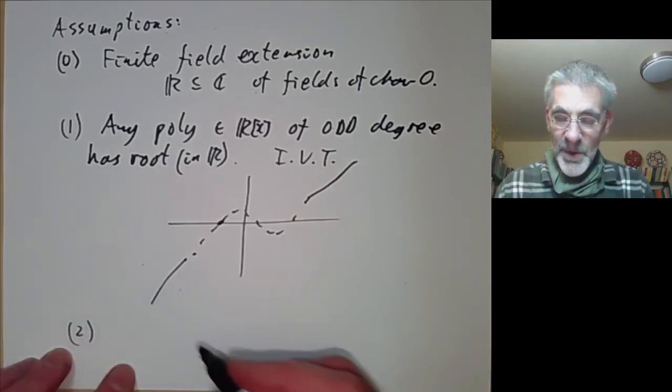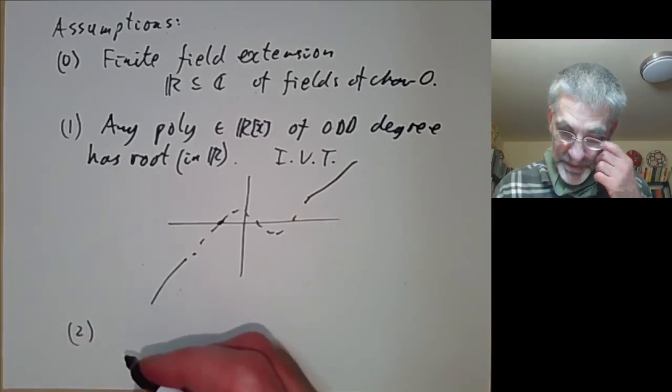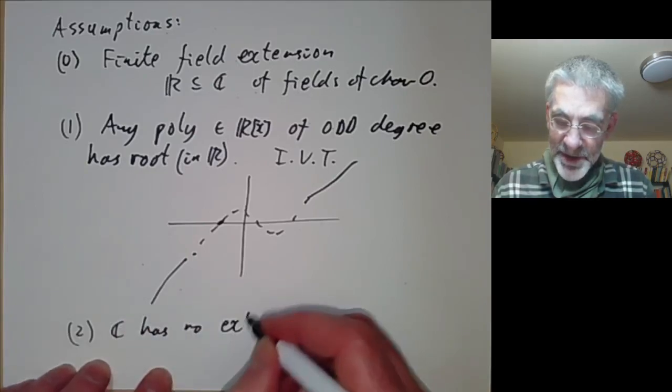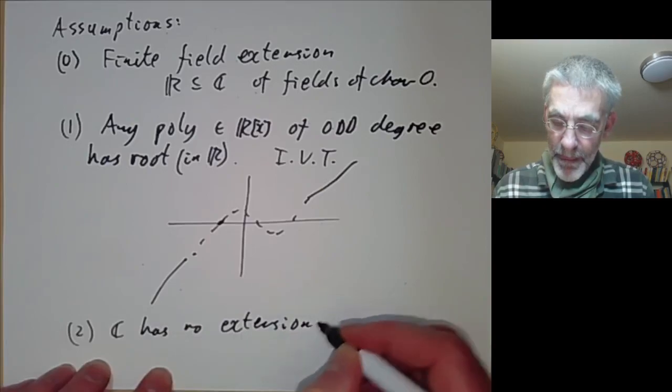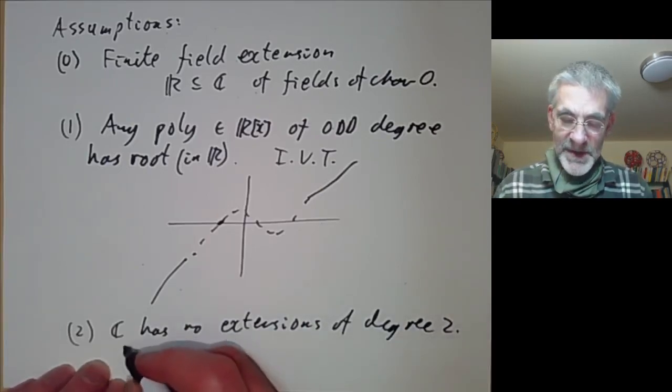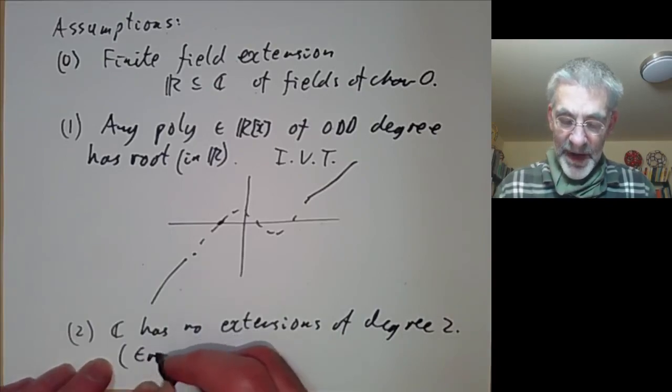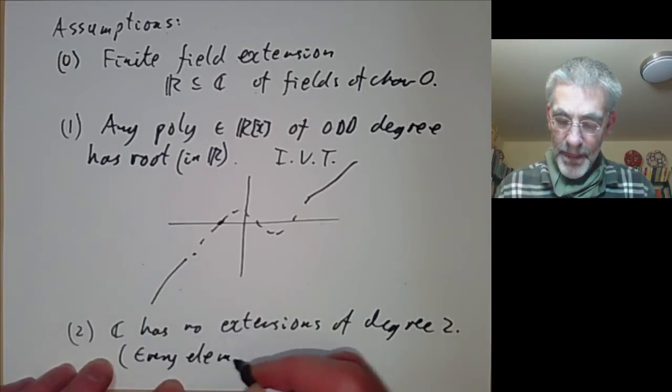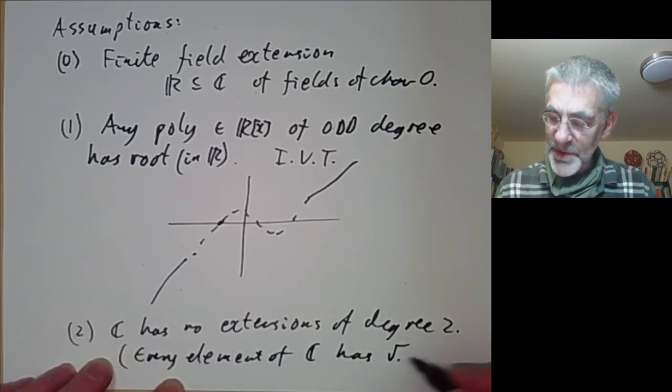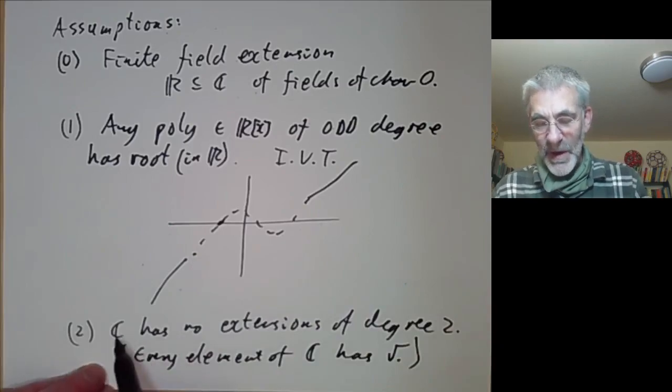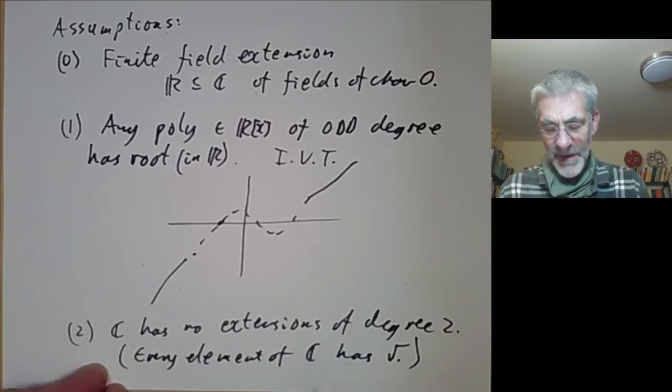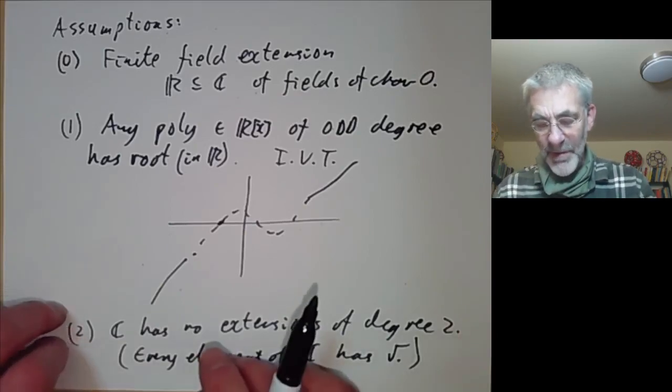The second thing we're going to assume is that C has no extensions of degree 2. This is equivalent to saying that every element of C has a square root because we assumed we're working characteristic zero. If we're working characteristic two, you have to be a little bit more careful about this equivalence, but we won't worry about that.